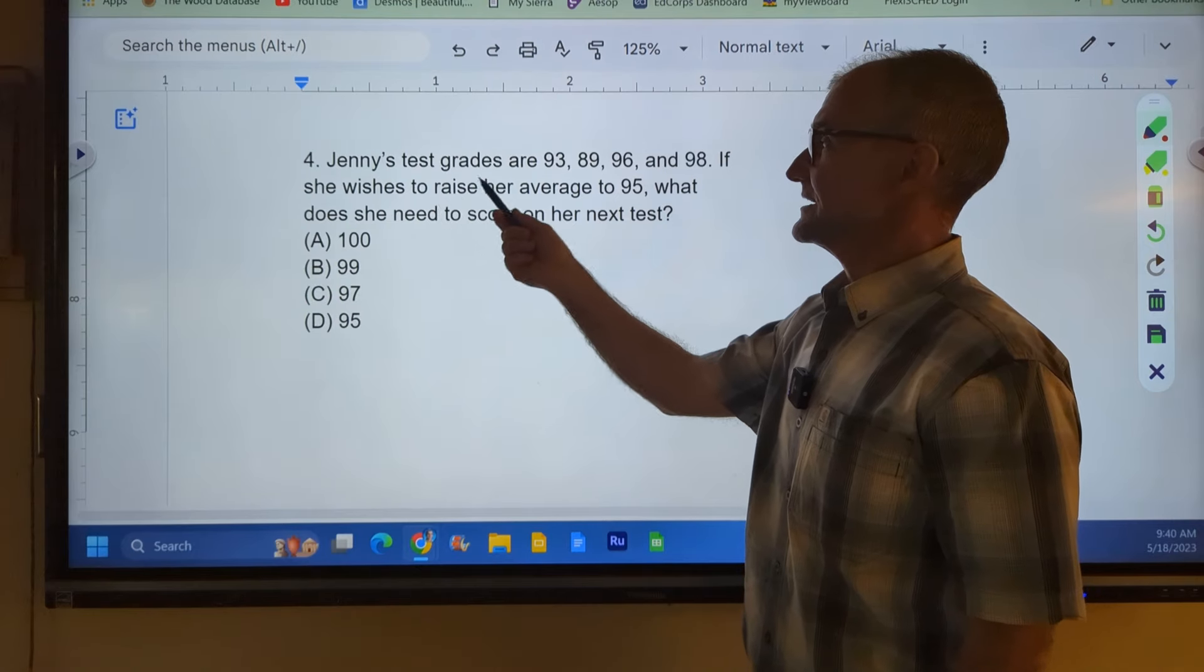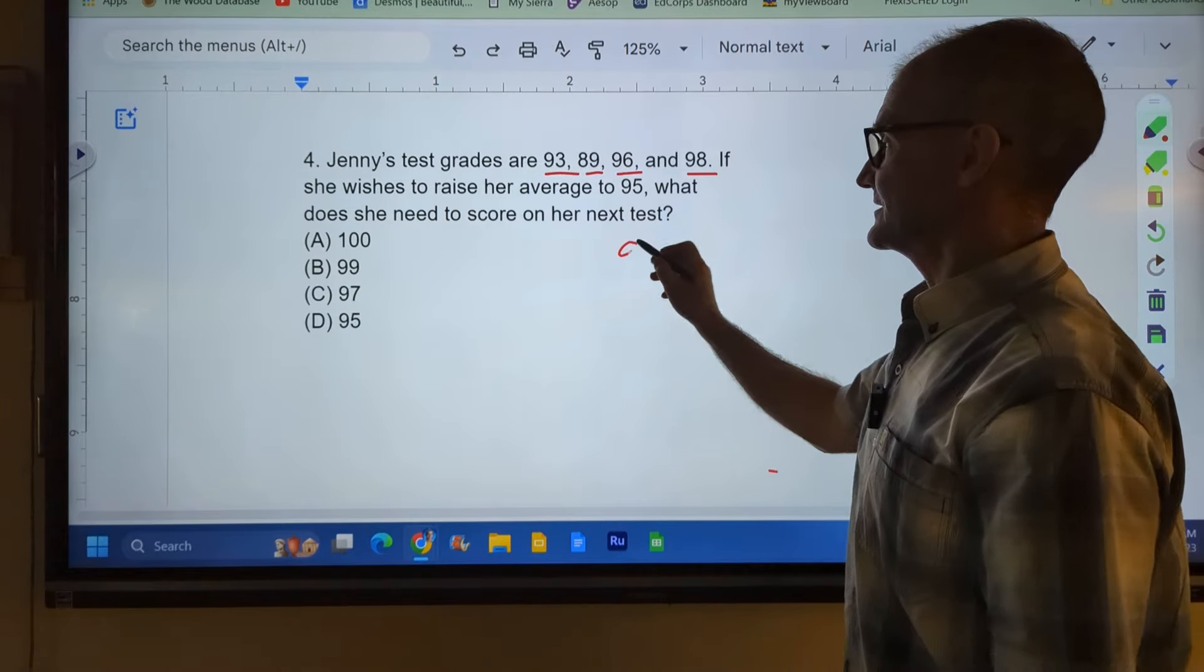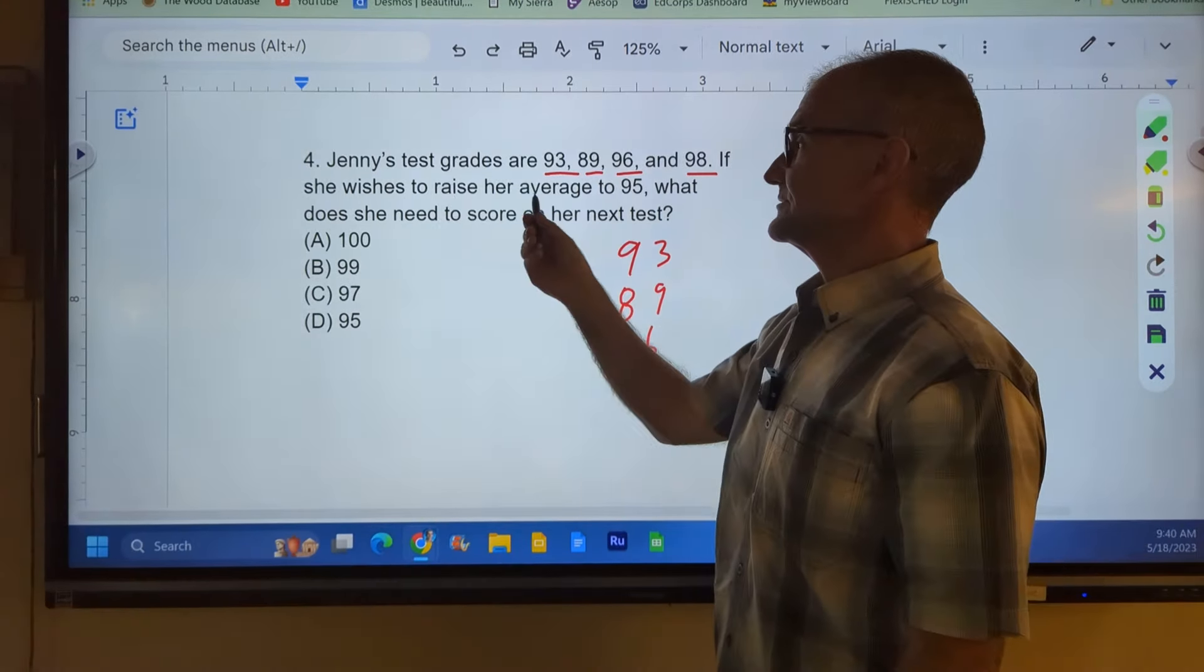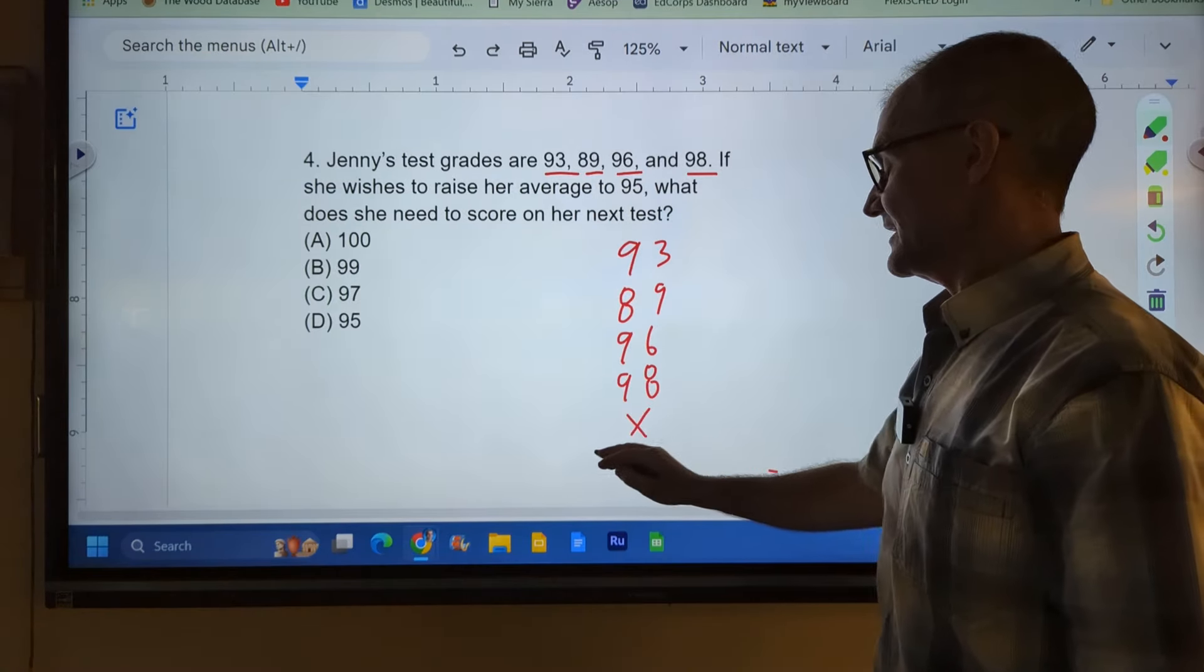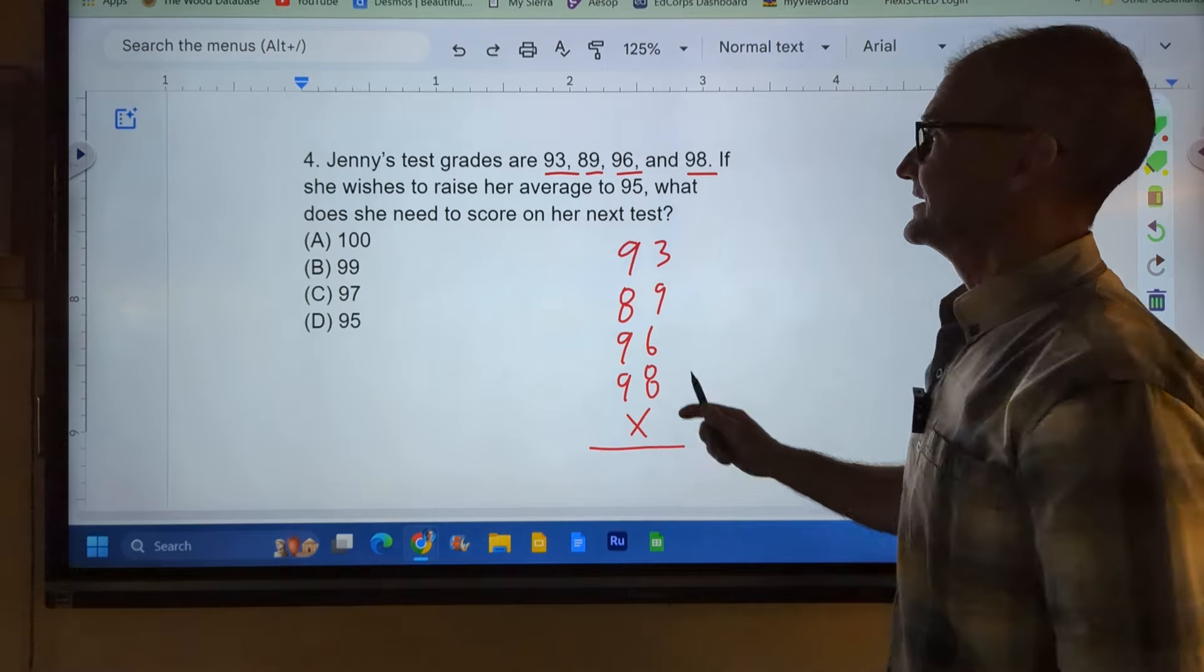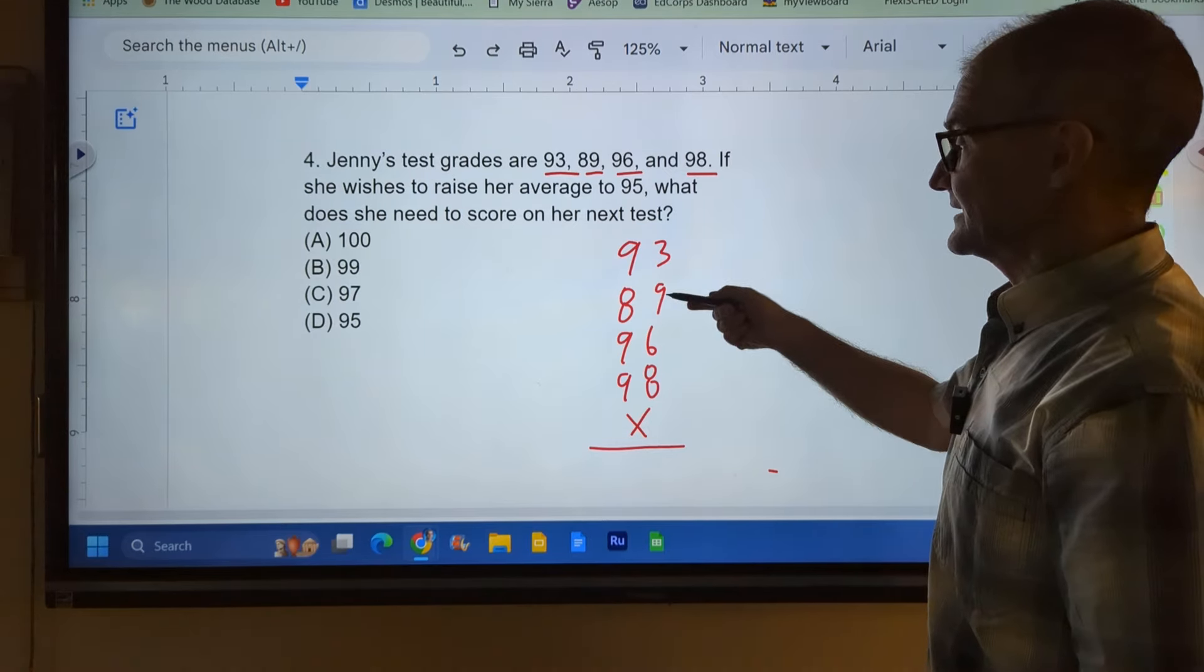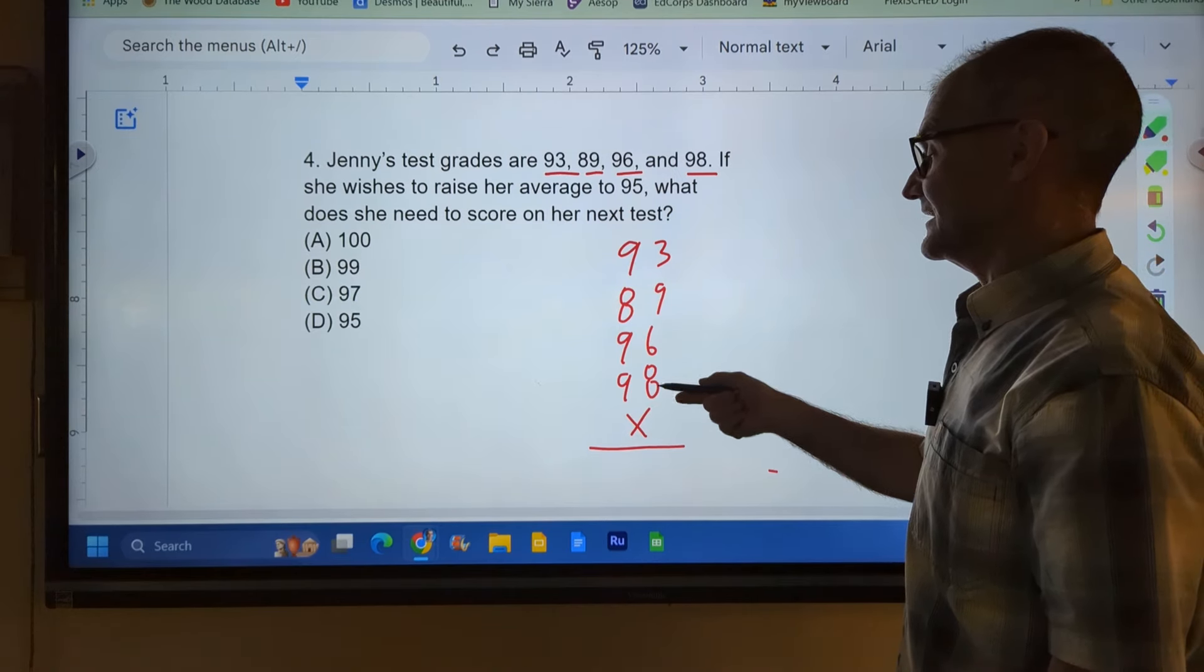Okay, number four, Jenny's test grades are 93, 89, 96, and 98. So I have four test scores there. If she wishes to raise her average to 95, what does she need to score on her next test? So this is going to be the fifth test. All five of these tests added up together, divided by 5, is going to equal a 95. So let's take a look at these tests right here. If we add these up right here, we've got 3 and 9, 12, 12 and 6, 18, 18 and 8, 26.